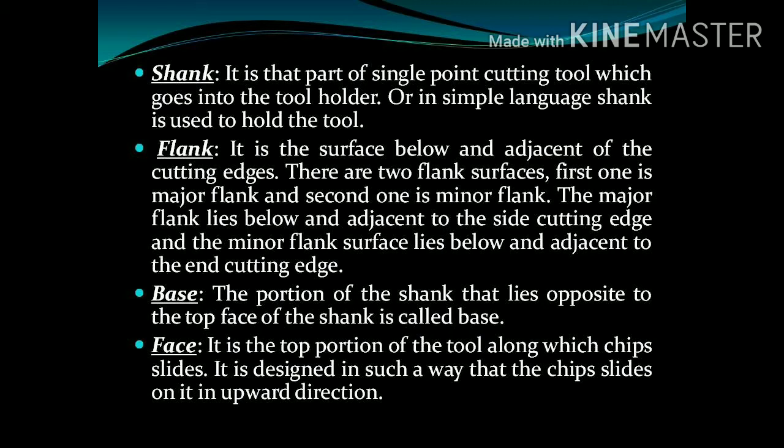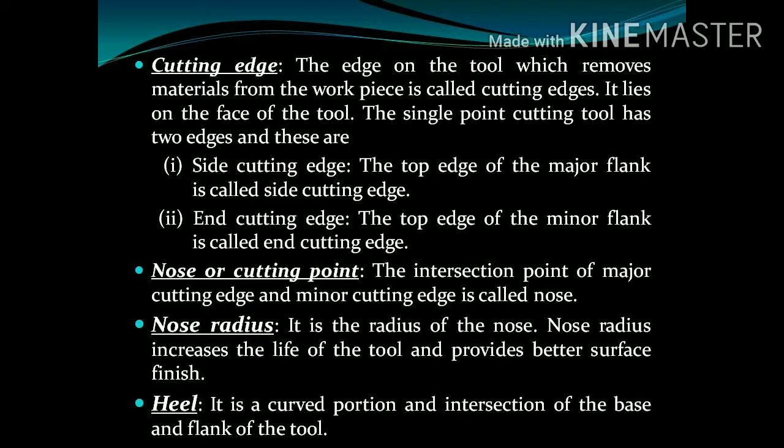Our next part is base. We can define this as the bottom surface of the shank. The next one is face. The name itself says that it is the top portion of tool along which the chips slide. The next part of tool is cutting edge. It is simply an edge which cuts or removes the material from the workpiece. The tool has two cutting edges: side cutting edge, which is the top edge of major flank, and end cutting edge, which is the top edge of minor flank.